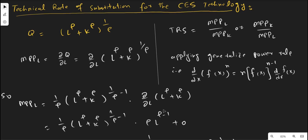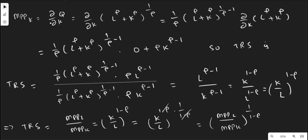In the same way we can obtain the marginal physical productivity of capital. We take the first order partial derivative of output with respect to capital, applying the generalized power rule in the same way, and we get the first order partial derivative in this form.